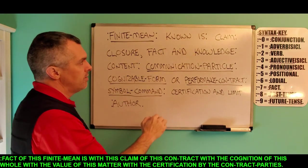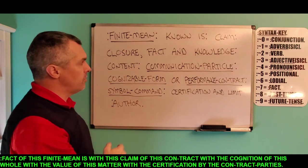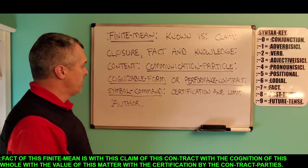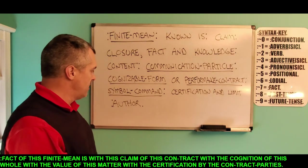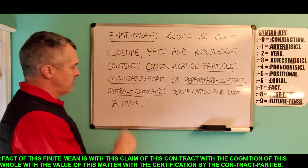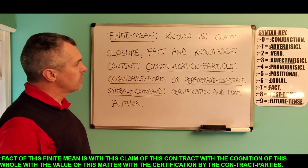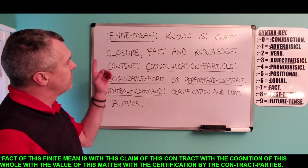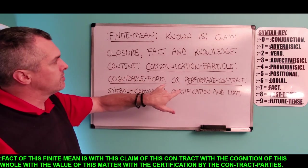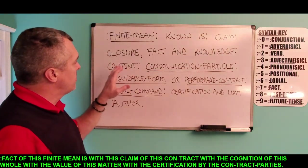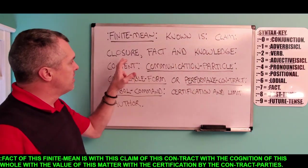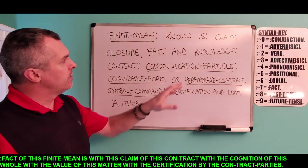For the finite mean of the known is with the claim of the closure, fact, and knowledge, with the content of the communication particle, with the cognizable form or performance contract of the symbol command, with the certification and limit by the author. The finite mean of the known — these are knowns, the facts are knowns — with the claim of the closure, fact, and knowledge. So the finite mean contains closure, fact, and knowledge. These are possessive of the claim of the finite mean.